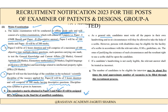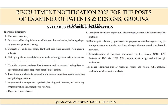As a general rule, candidates must write all papers in their own handwriting — under no circumstances will they be allowed to take a scribe. If a candidate's handwriting is not easily legible, the relevant answer will be treated as incorrect. The number of candidates eligible for interview may be about 10 times the total approximate number of vacancies. After crossing the preliminary and mains, candidates move on to the interview. Now let's look at the syllabus for the mains examination.